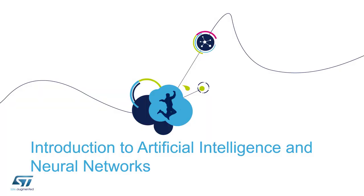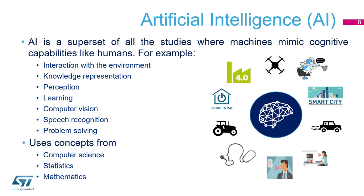Let's dig into artificial intelligence. What we are seeing is artificial intelligence is a superset of everything concerning machine mimic of cognitive capability like humans. Each time we are trying to copy or to have a mimic of human stuff, it falls into the big category of artificial intelligence — it's covering everything.